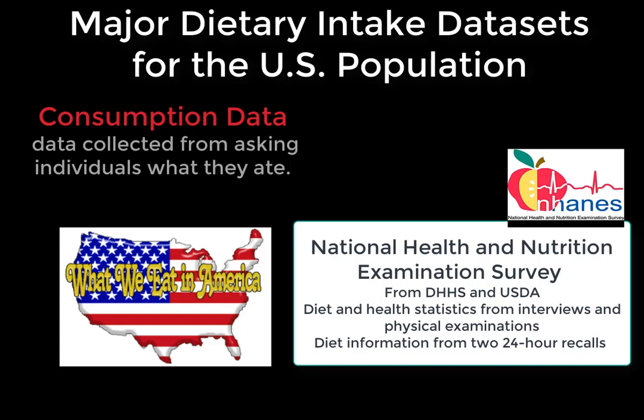NHANES is designed to assess the health and nutritional status of adults and children in the United States. The survey is unique as it combines interviews and physical examinations. Demographic, socioeconomic, dietary, and health-related data points are collected. Dietary intake is collected on about 5,000 people each year using two 24-hour recall interviews with the multiple-pass approach. The first interview is collected in person, and the second by telephone three to ten days later. Reports generated from this data are titled What We Eat in America.